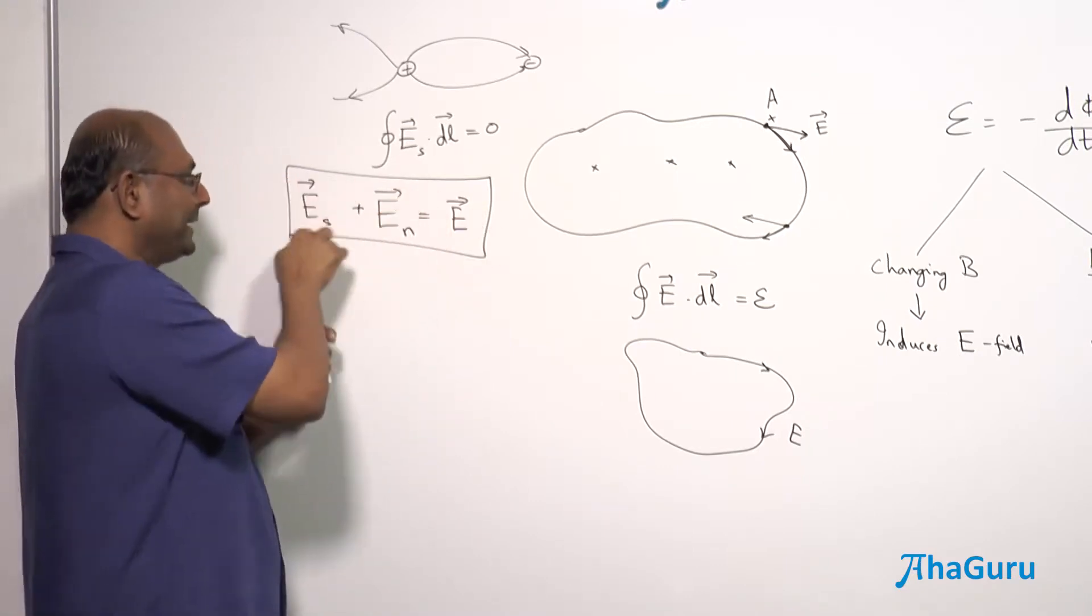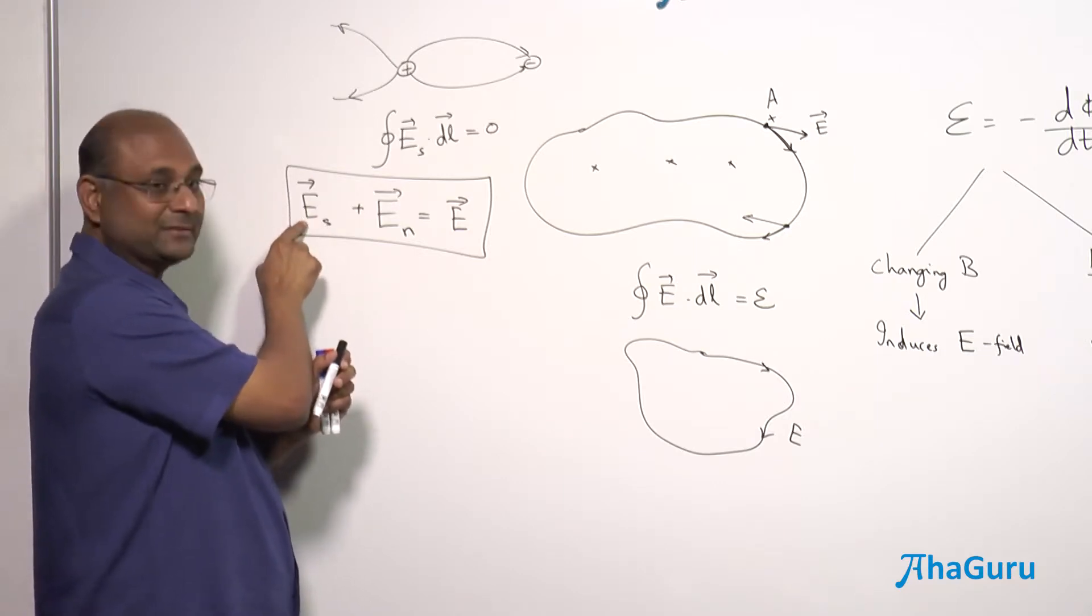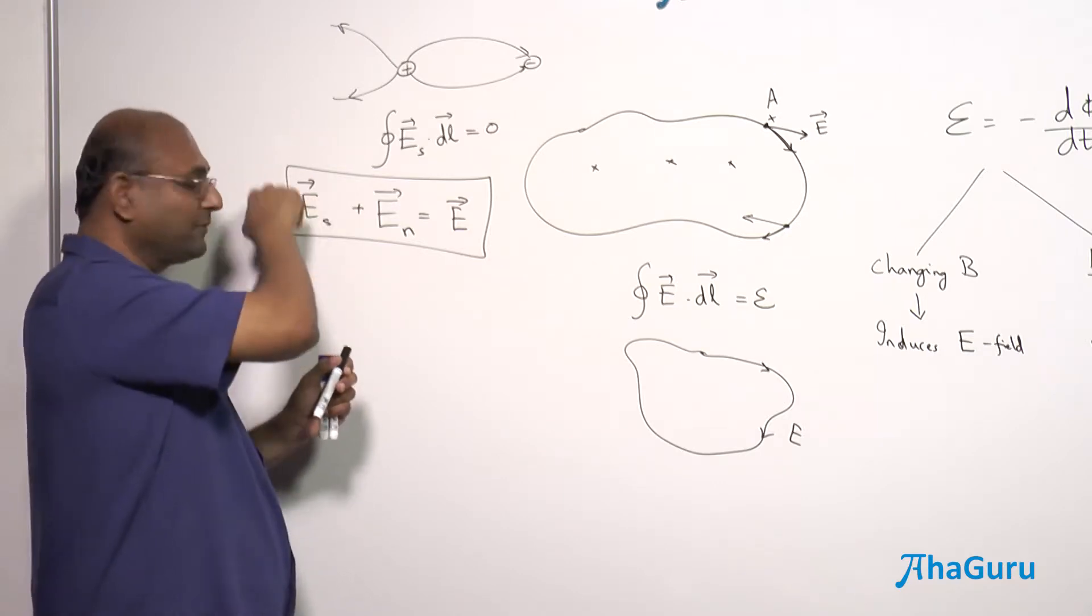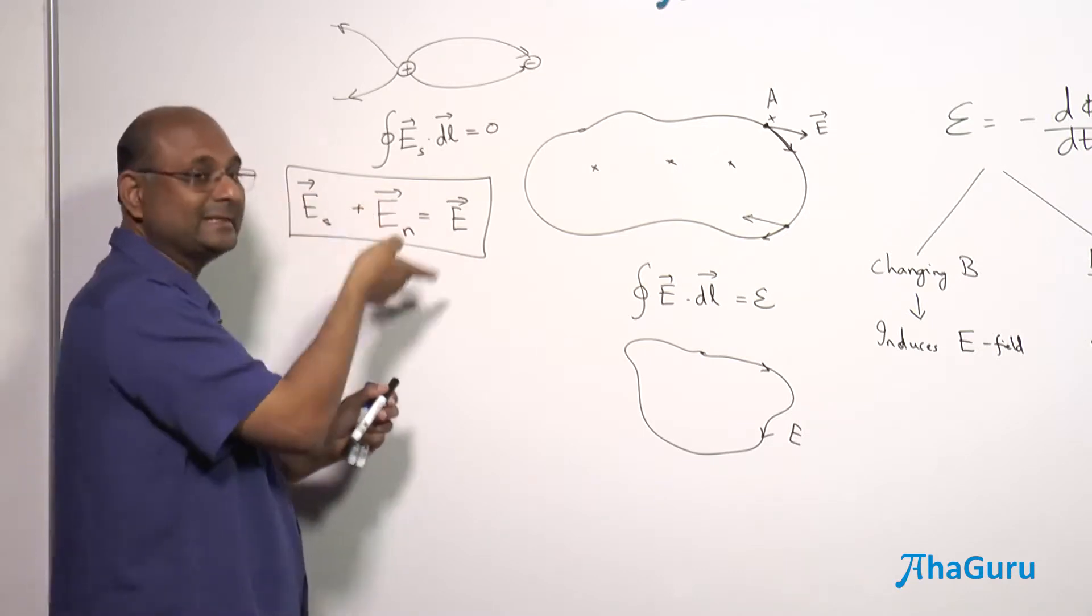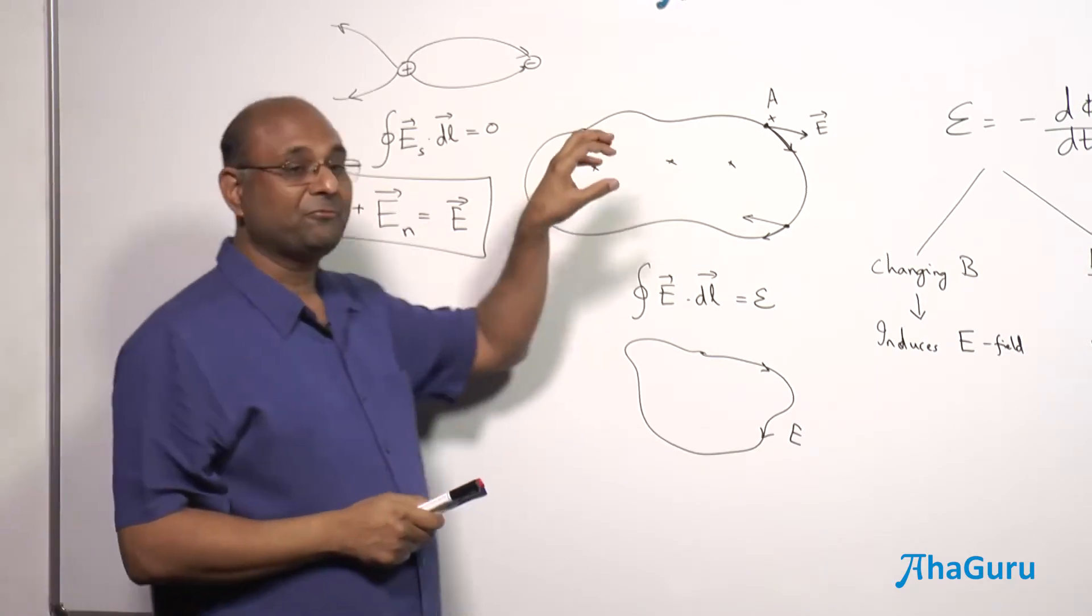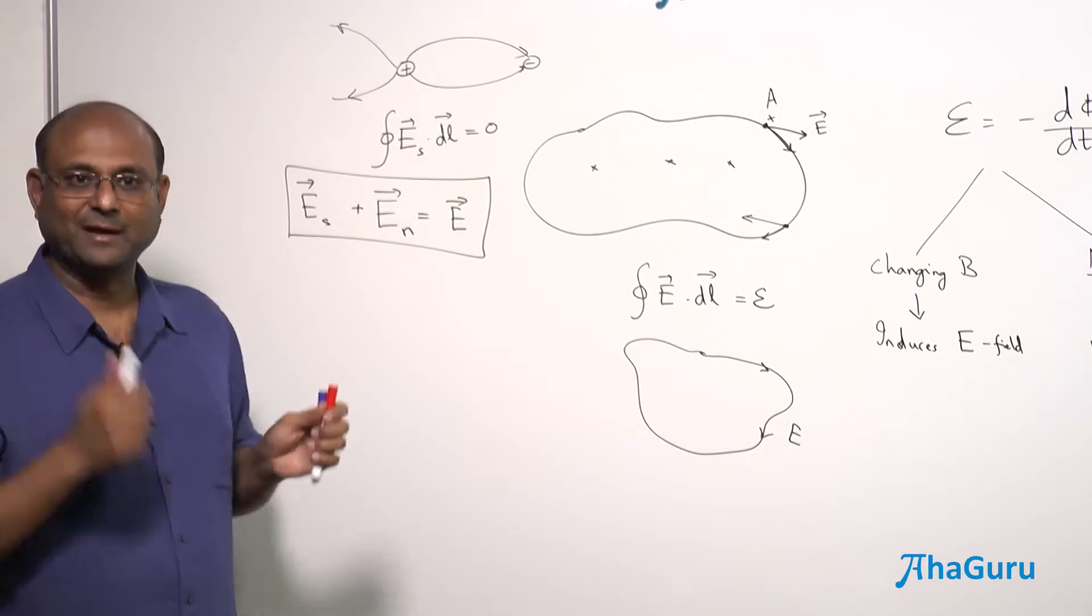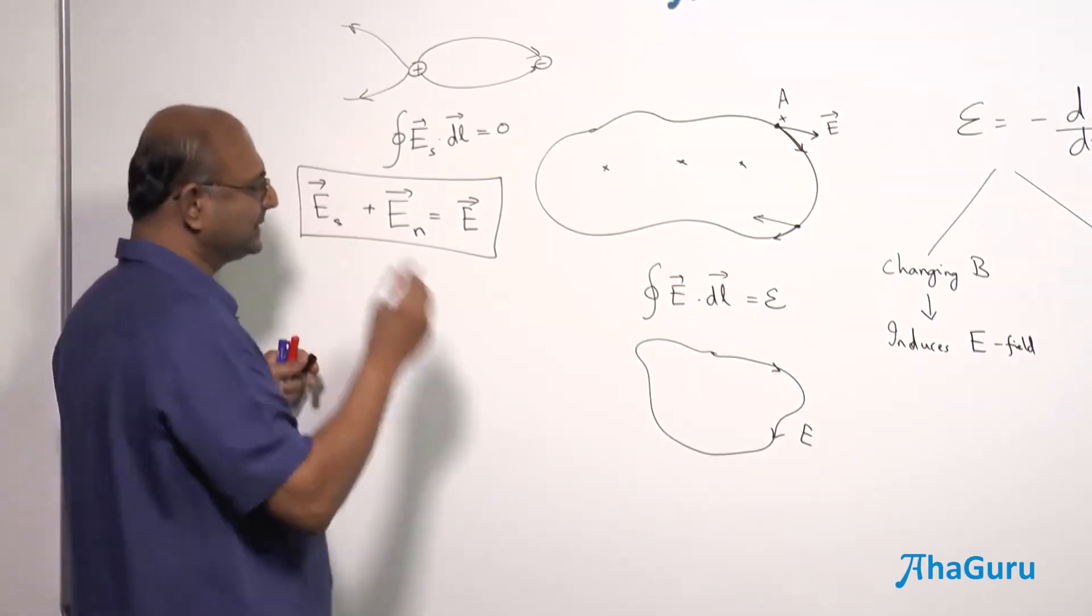This is the combination. If you feel like, you can separate it out and say this is the source of, these are charges which are static charges, source of an electric field. These are changing magnetic fields which are the source of the electric field. Anyway. Now, the problem is, sometimes I want to find out what this electric field is. Let us think about a question where you might need it. Let us take this example.